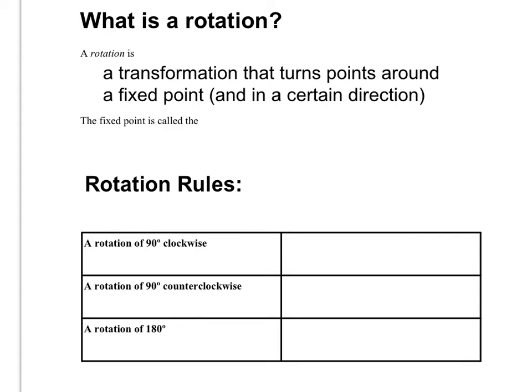So a rotation, if you want to write this down in your notes, is a transformation that turns points around a fixed point and in a certain direction. The point that you are rotating around, that fixed point, is just called the center of rotation.